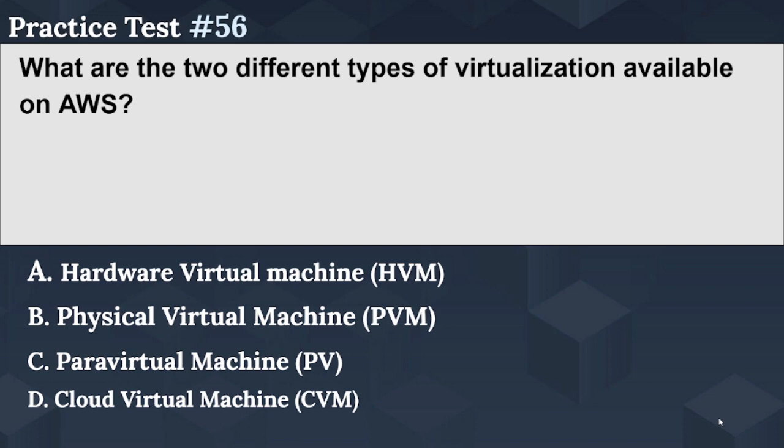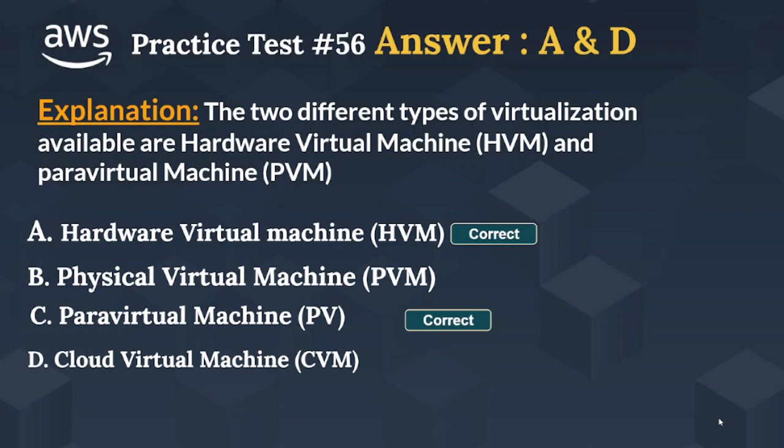The right answer is Options A and C: hardware virtual machine (HVM) and para virtual machine (PVM). The two different types of virtualization available on AWS are hardware virtual machine (HVM) and para virtual machine (PVM).